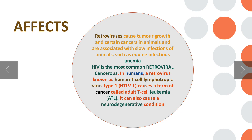Retroviruses can cause tumor growth and certain cancers in animals, and are associated with slow infections in animals such as equine infectious anemia. HIV is the most common retroviral cancerous infection in humans. A retrovirus known as human T cell lymphotropic virus type 1, called HTLV-1, causes a form of cancer called adult T cell leukemia, ATL. It can also cause a neurodegenerative condition.